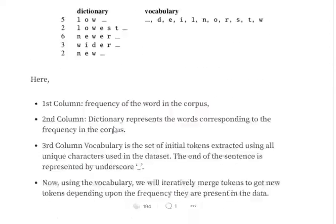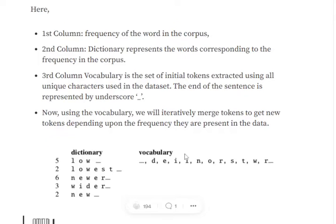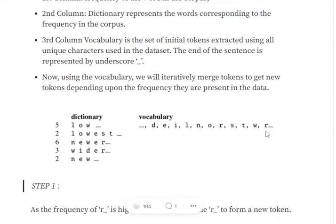'r underscore' appears six times plus three times, that's nine. It is the highest combination occurring, so we added a new token in our vocabulary: 'r underscore'. We have merged these tokens r and underscore.